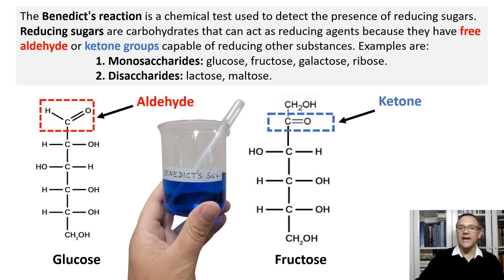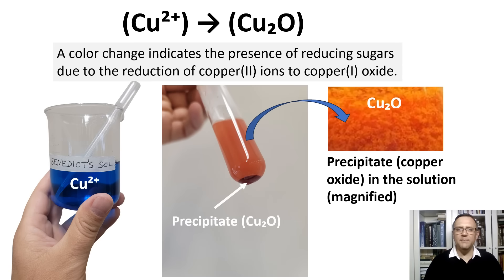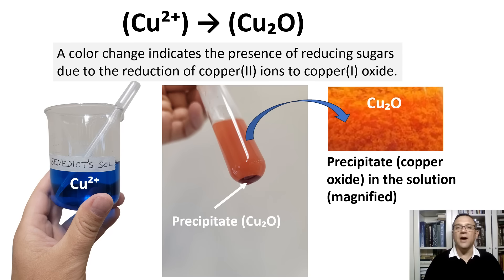Benedict's solution contains copper ions. When it is mixed with reducing sugars, the copper ions get reduced. In the Benedict's reaction, copper ions of Benedict's reagent are reduced to copper oxide, which precipitates out of solution, indicating the presence of reducing sugars. In the Benedict's test, when the reagent reacts with the sugar, a solid copper oxide forms and separates from the liquid, creating a visible precipitate. This change helps us identify the presence of reducing sugars.